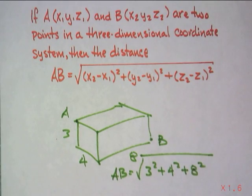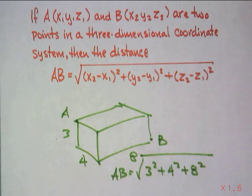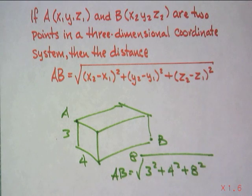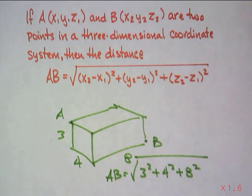That makes it a lot easier. You square them, put them together, and simplify. It's straightforward — three-dimensional. That's why it's called the space diagonal, because you're going through a three-dimensional space.